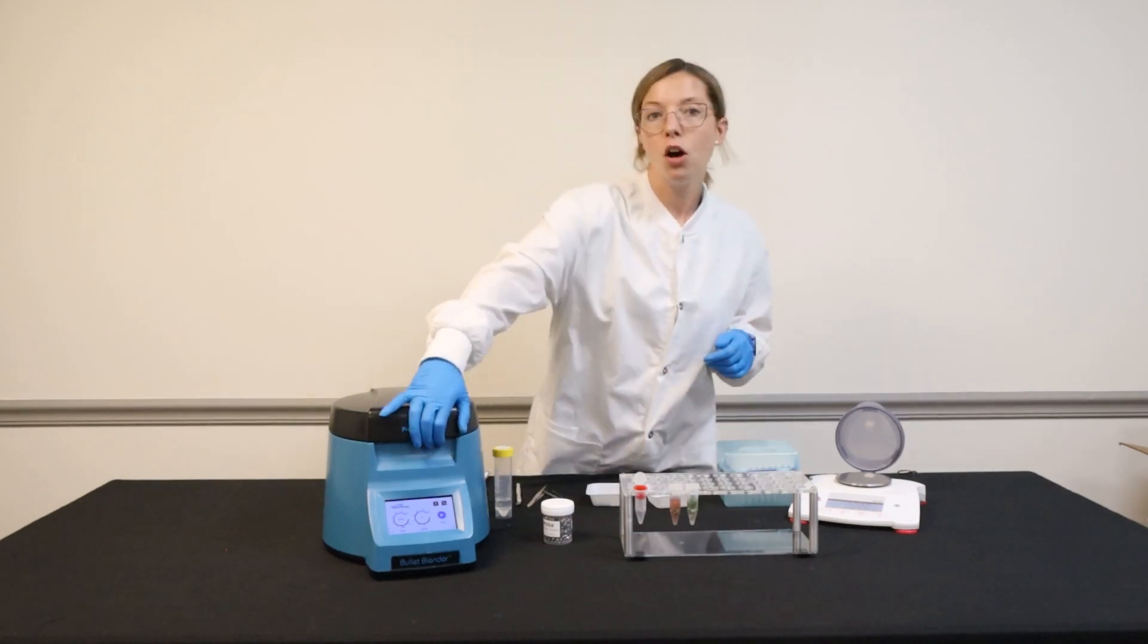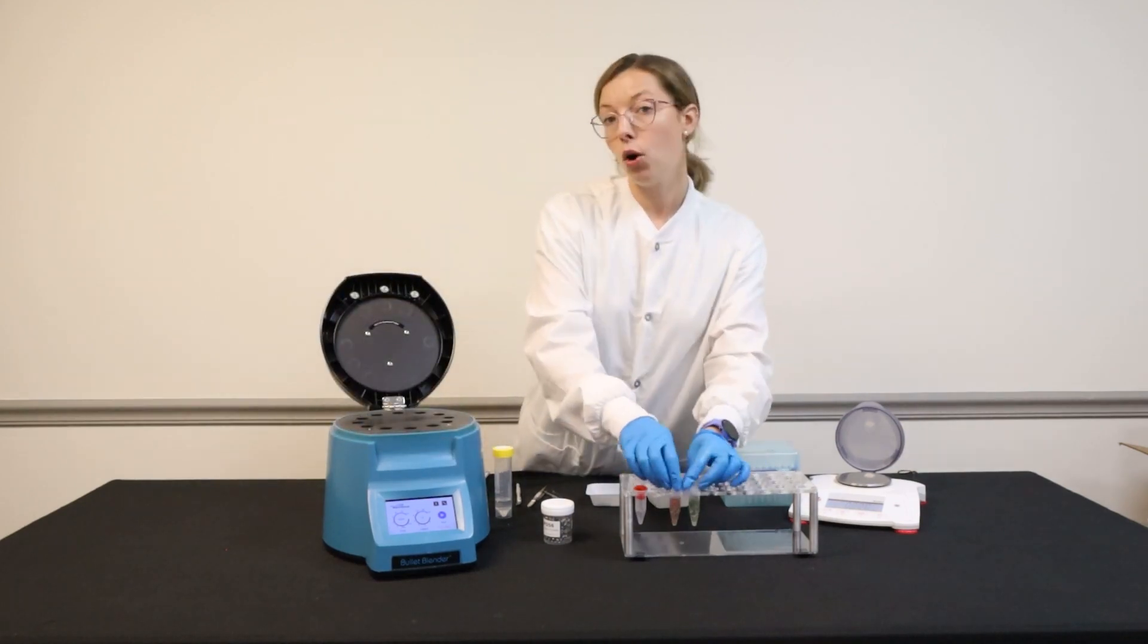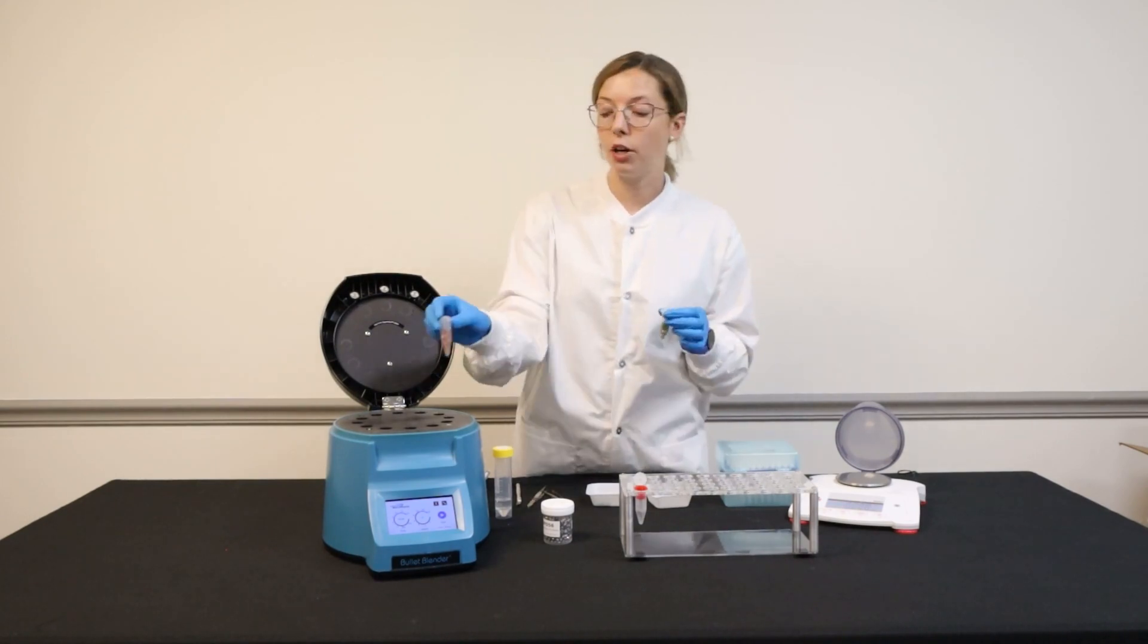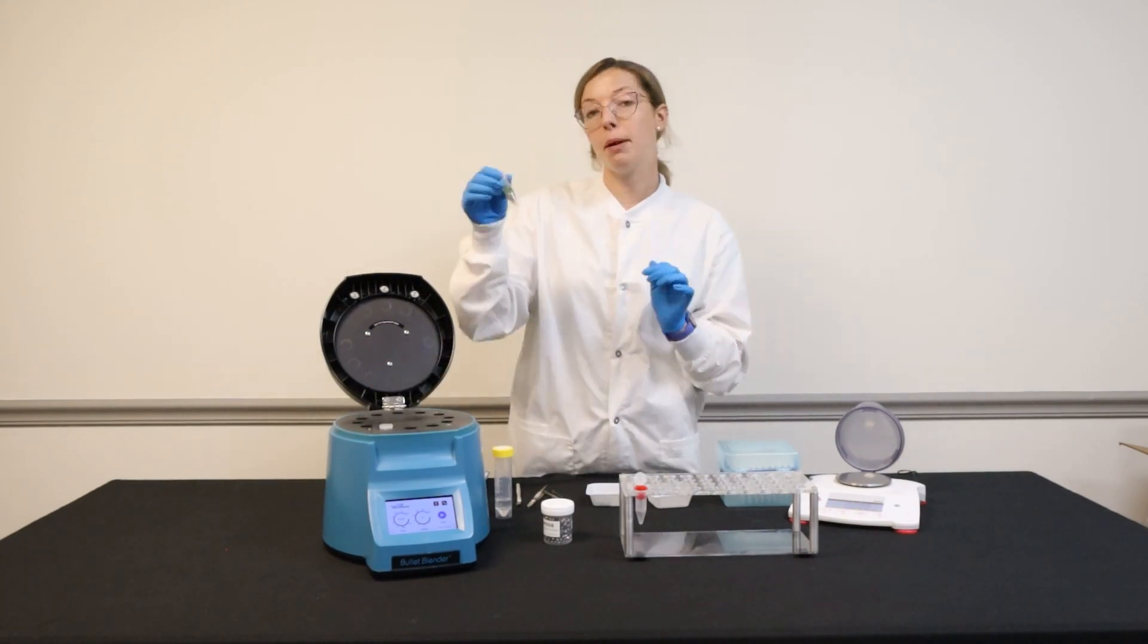Once your tubes are ready to go, we're going to load them into our 5E Bullet Blender. Unlike a centrifuge, you don't have to worry about balancing your tubes, so I'm going to place both of my samples up front.